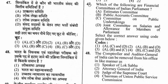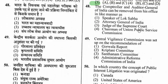Question 48: The Comptroller and Auditor General of India can be removed from office in the same manner as whom? Options are Speaker of Lok Sabha, Attorney General of India, Judge of Supreme Court, and Chairman of UPSC. The right option is option 3 — Judge of Supreme Court, on like manner and like grounds.